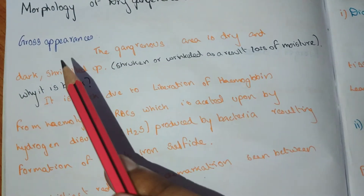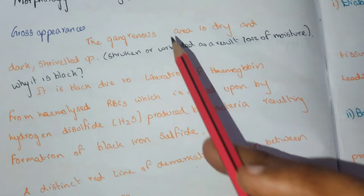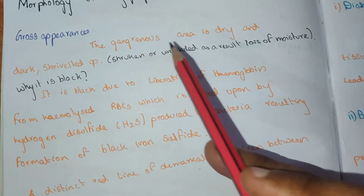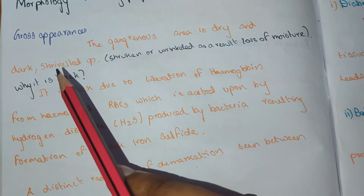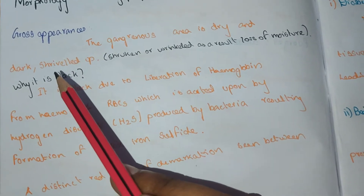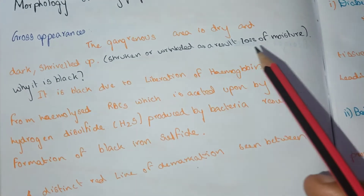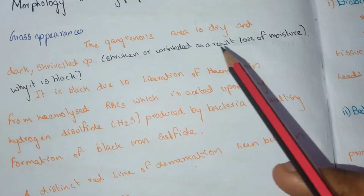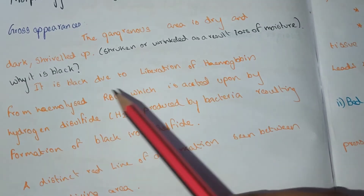Morphology of dry gangrene — gross appearance: the gangrenous area is dry, dark, and shriveled up, meaning shrunken and wrinkled, as a result of loss of moisture.